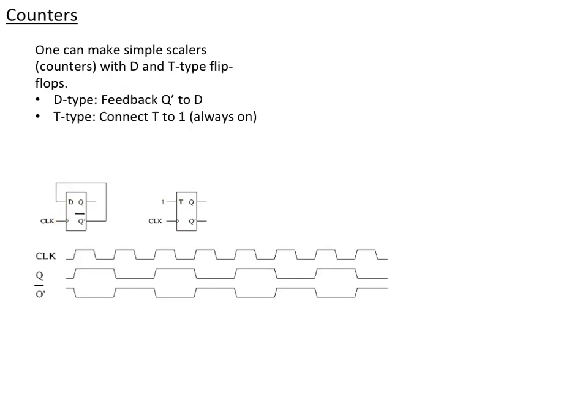You can see what happens. The clock comes in on the clock edge. Q bar, whatever it was, D becomes that. So it switches state on every upward clock pulse. If we start at zero, we change. It goes up. We change again, it goes down. Change again, it goes up. Always, Q bar becomes the next Q. That's what the feedback does.